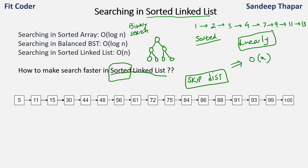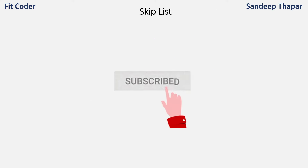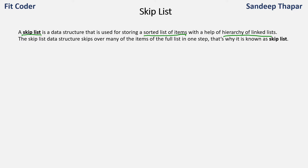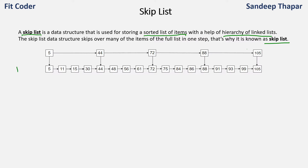Skip list is a form of linked list but it has multiple levels. It is a data structure used for storing a sorted list of items with the help of a hierarchy of linked lists. We have a multi-level linked list and those levels help us skip many items of the full list in one step. The bottom-most level is called level 1 and the above levels are incremented. Level 1 is the normal lane and the above levels are called express lanes.